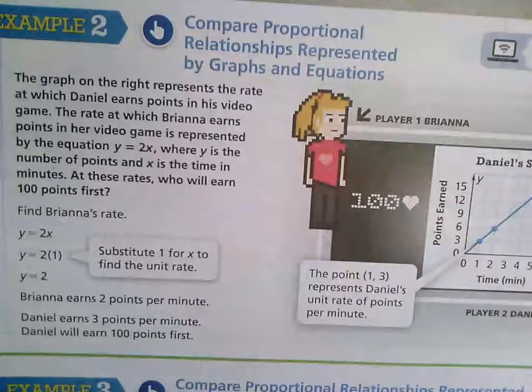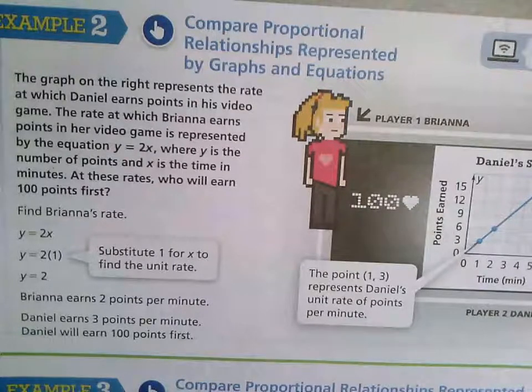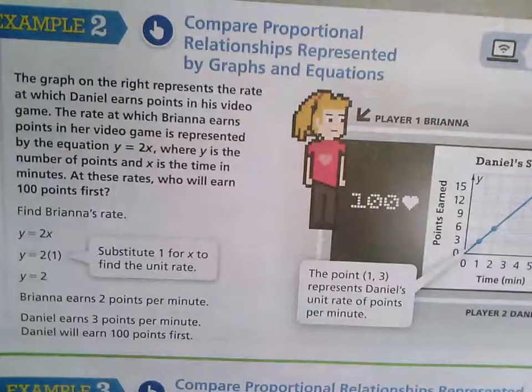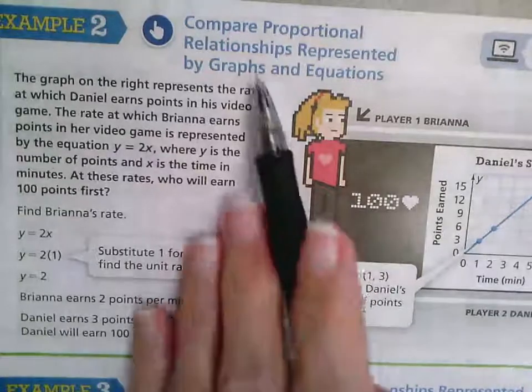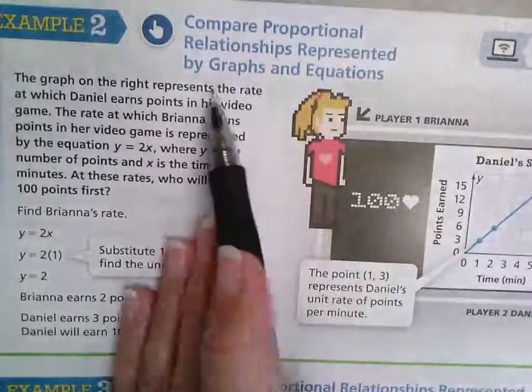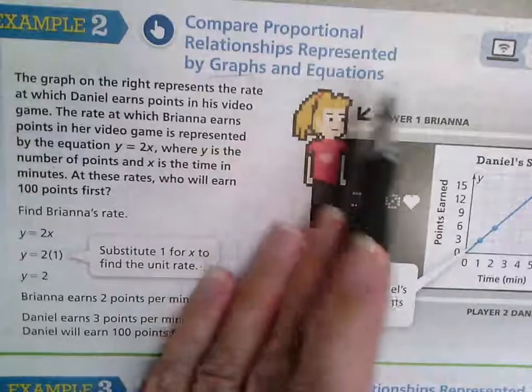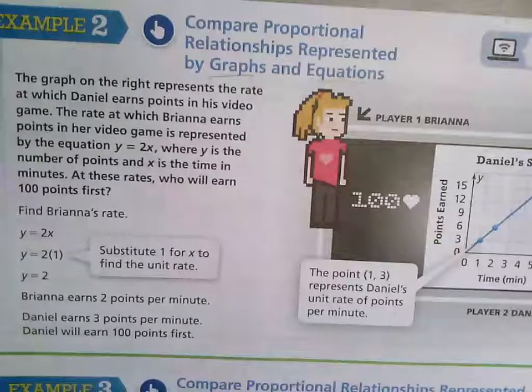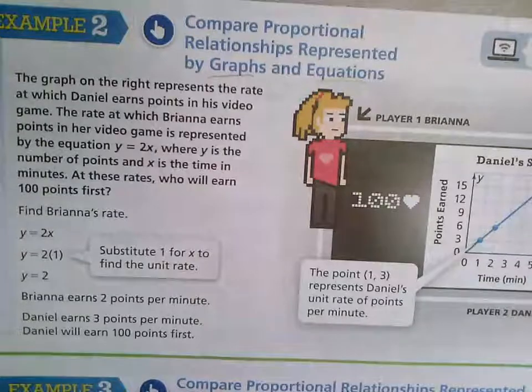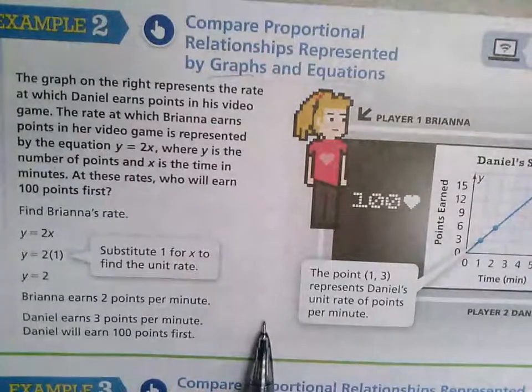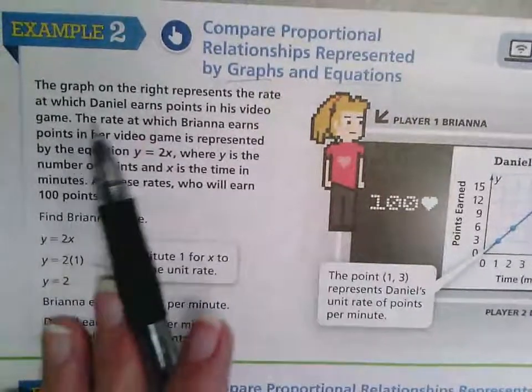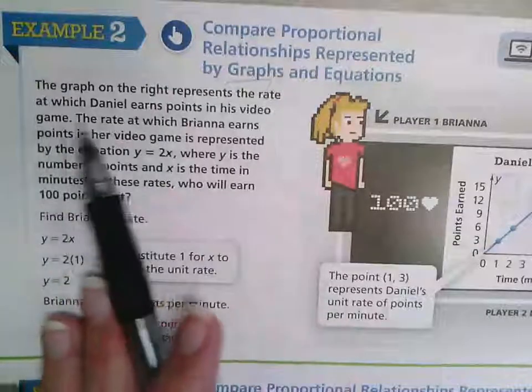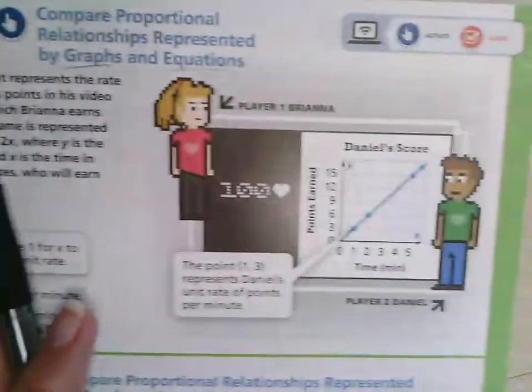Page 423, Example 2. Compare proportional relationships represented by graphs and equations. The previous example was using tables and graphs. Now we're going to use graphs and equations. The graph on the right represents the rate at which Daniel earns points in his video game.